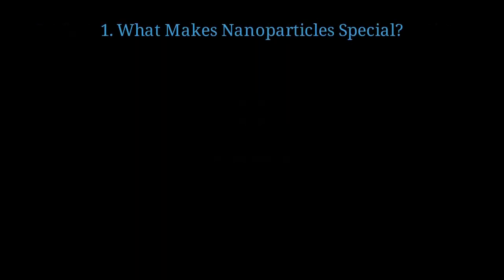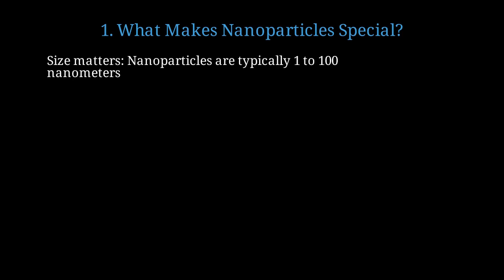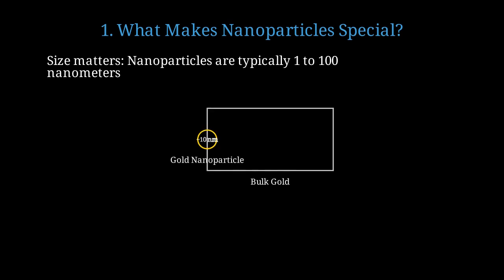First, let's understand what makes nanoparticles fundamentally different from bulk metals. Nanoparticles are incredibly tiny, ranging from 1 to 100 nanometers. To put this in perspective, they're about 1,000 times smaller than the diameter of a human hair. Here we see the size difference: bulk gold on one side and a tiny gold nanoparticle on the other. The nanoparticle is so small that quantum effects become dominant. The key condition is that the particle diameter is much smaller than the wavelength of light, typically around 400 to 700 nanometers for visible light.